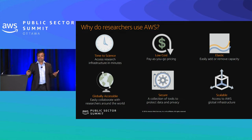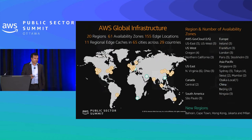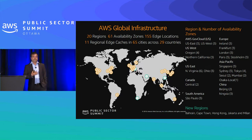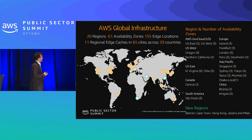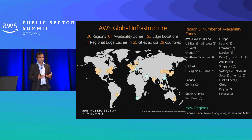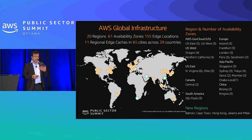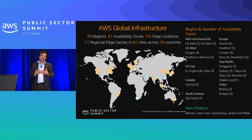The infrastructure is elastic — that means you can automatically expand and shrink it. It is globally accessible, secure, and scalable. AWS is a global infrastructure available in 20 regions, present in the U.S., Europe, Canada, as well as various other countries. They're interconnected networks such that you can share your data, share your algorithm, and work together with various folks. We have 20 regions, 61 availability zones — those small circles you see are the availability zones — and there are numerous edge locations.